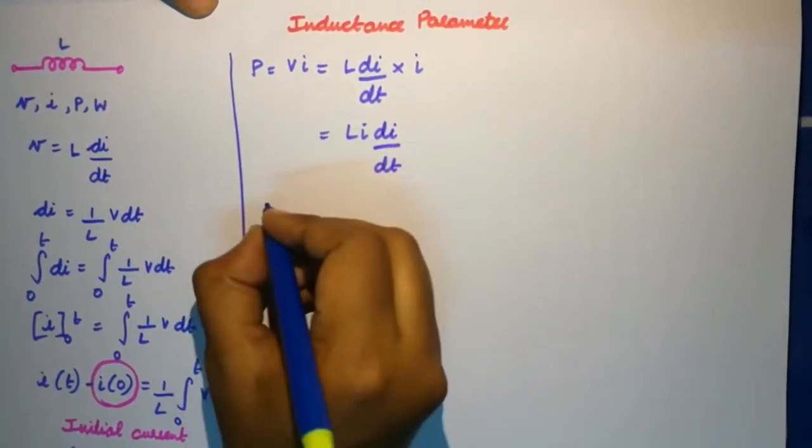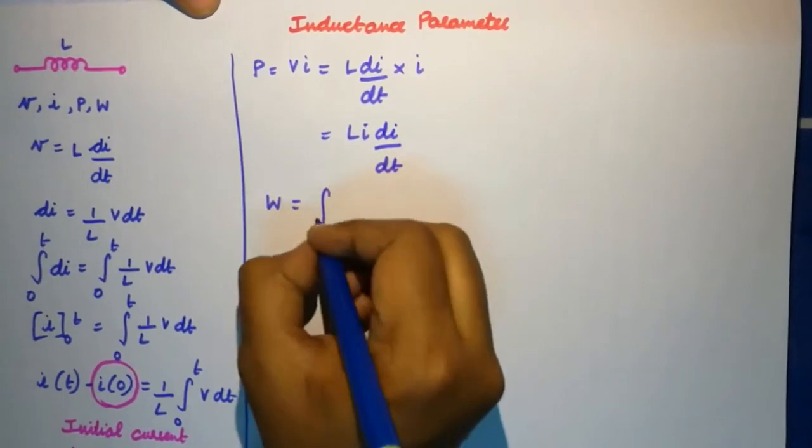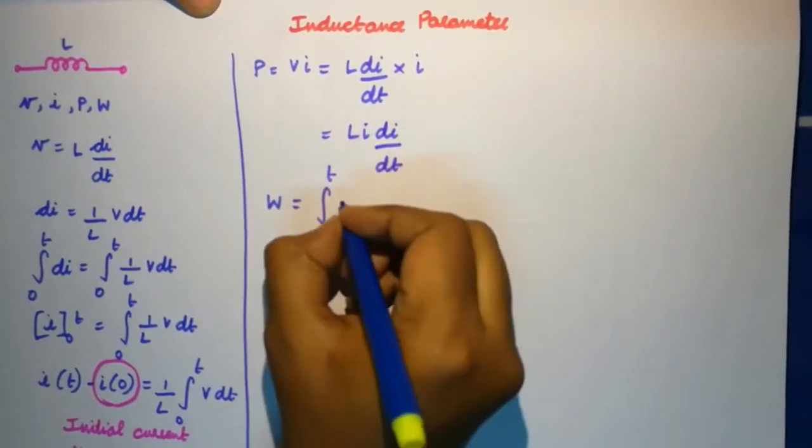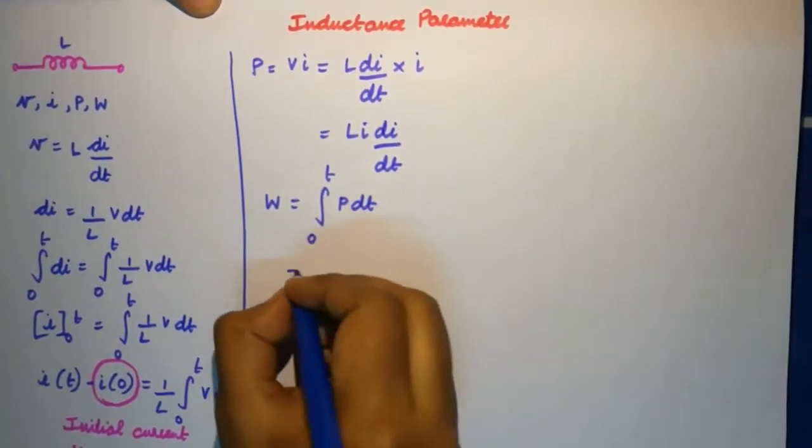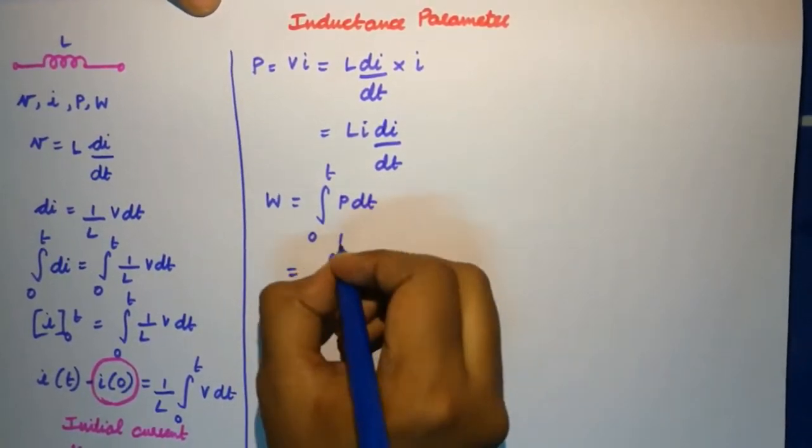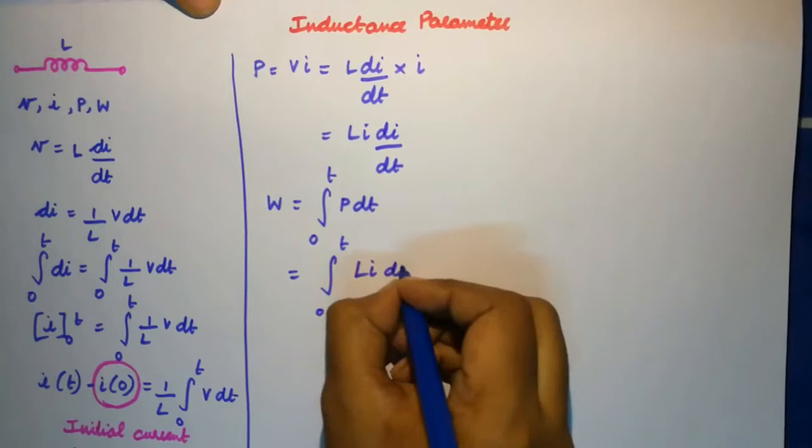Next we need to find the energy which is lost in the inductor and we can get it by integrating the power. So when I integrate it I would get Li di by dt.